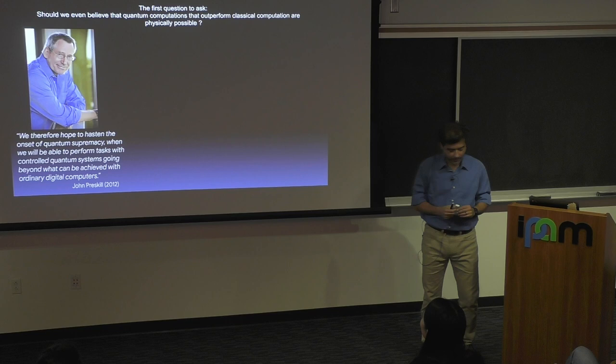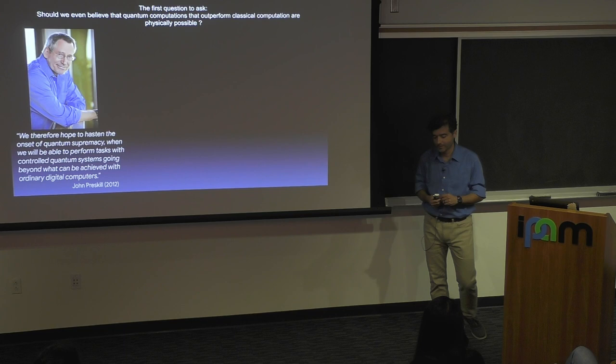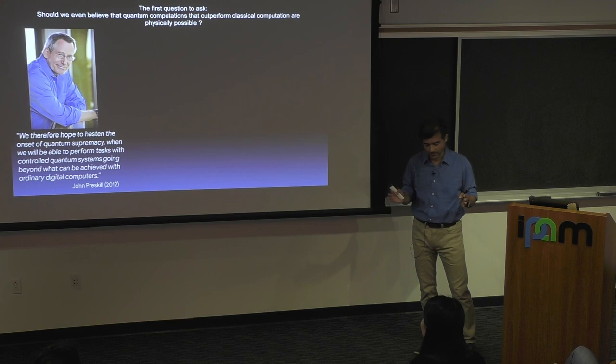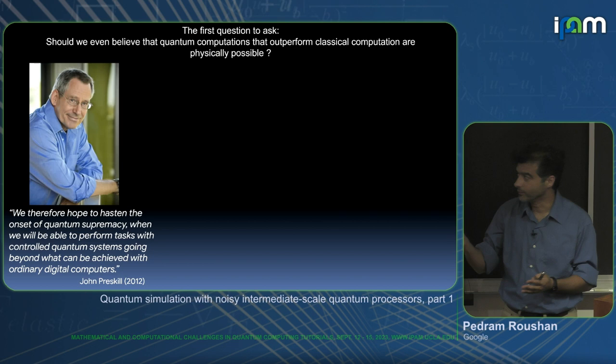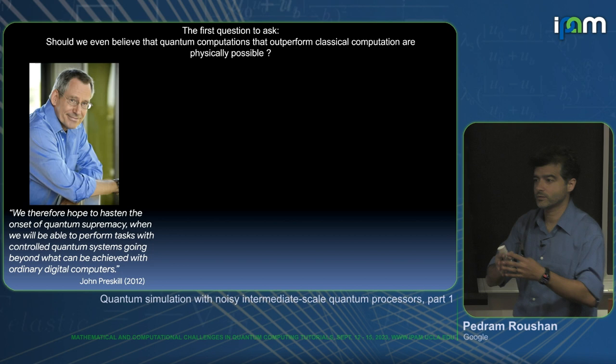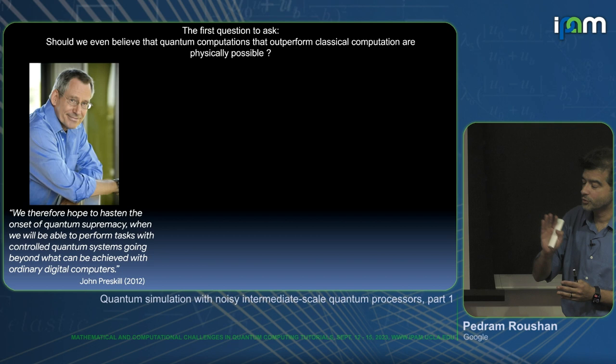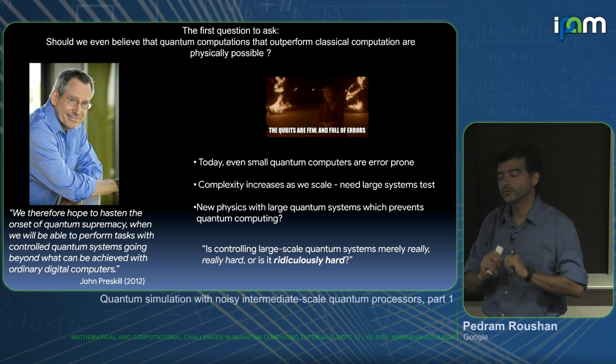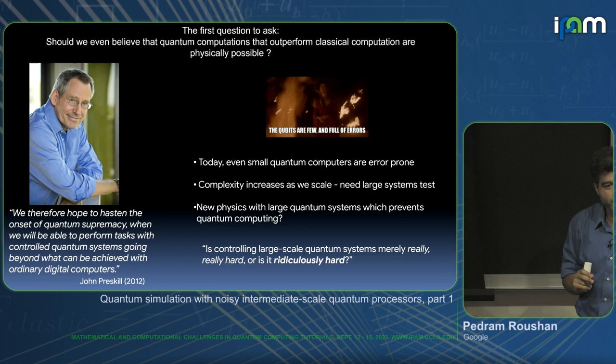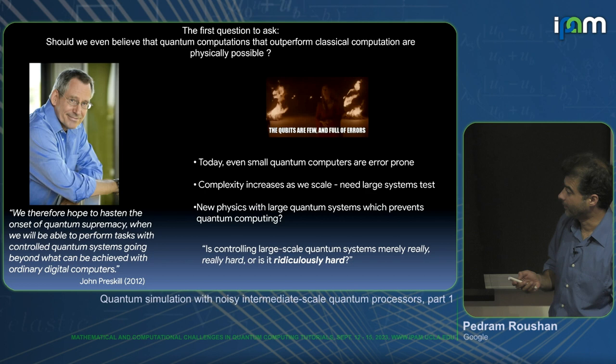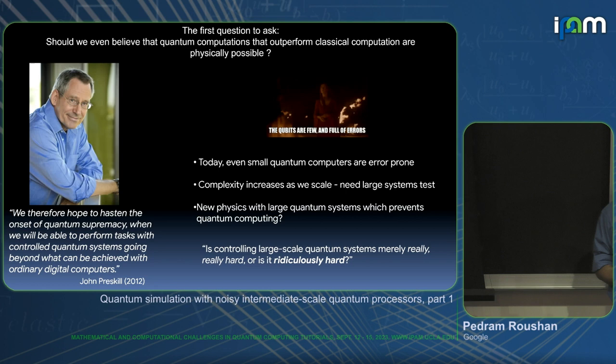Our team is known for the quantum supremacy experiment — the 'beyond classical' experiment — which landed about four years ago. The idea was a decade-old challenge, popularized by John Preskill: if quantum processors are good for something, they should do anything. You choose your own task, and show that you can do even that before you factor numbers or optimize portfolios. Can you just do one thing you choose yourself to do? That's the premise of the experiment.